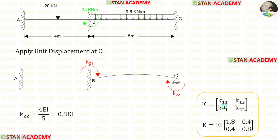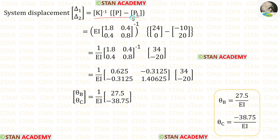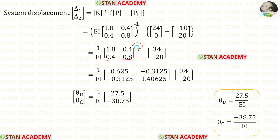We have found both rows of the stiffness matrix. Applying the values with EI factored out, we now have all components for the formula. EI inverse is 1/EI. Adding the two matrices and finding the inverse — if you do not know how to find the inverse of a 2×2 matrix, see the link in the description. After multiplying the matrices, we obtain theta B and theta C.